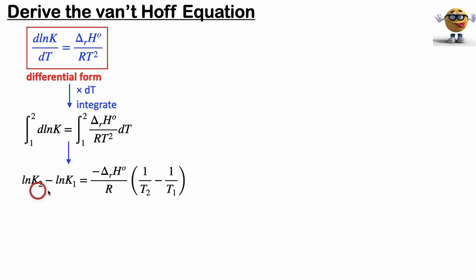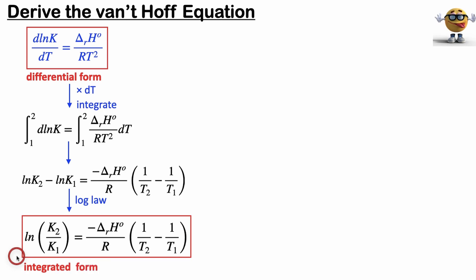So if we do that, we're left with this here. This is state 2 minus state 1. Delta H and R are constants, so they get yanked out of the integral. And the integral of 1 over T squared is negative 1 over T. So we're left with this one right here. We'll merge these two terms together using the log law. And that, my friends, gives us the Van't Hoff equation in its integrated form.